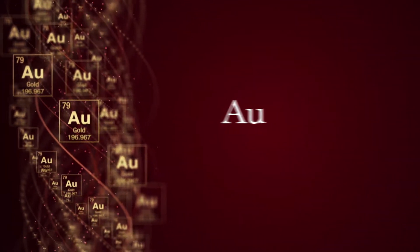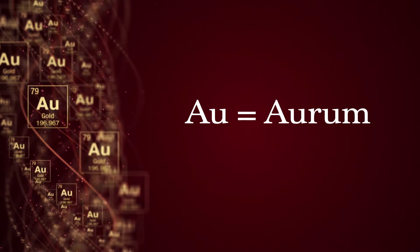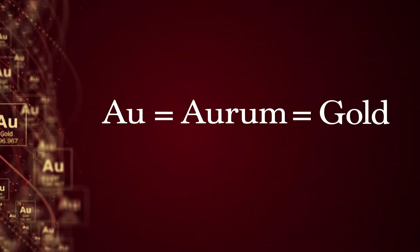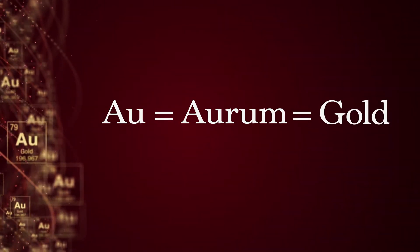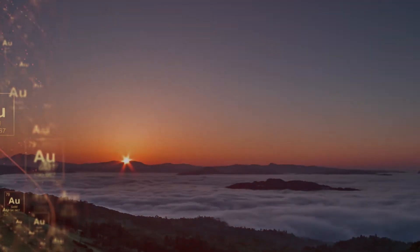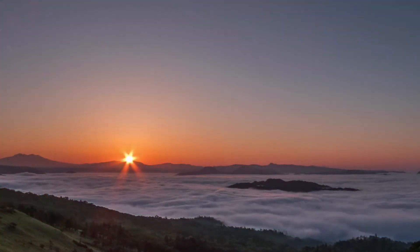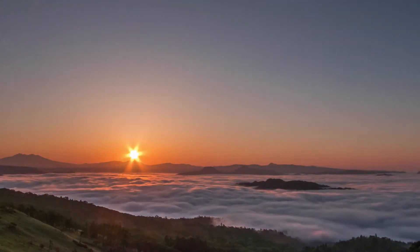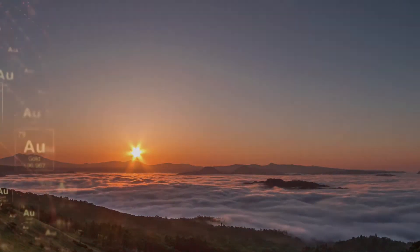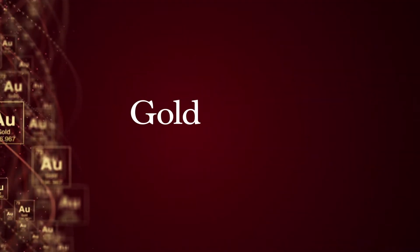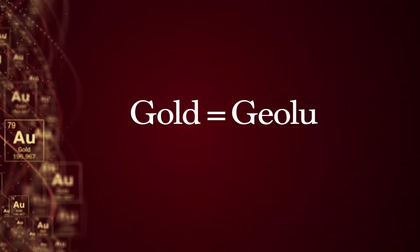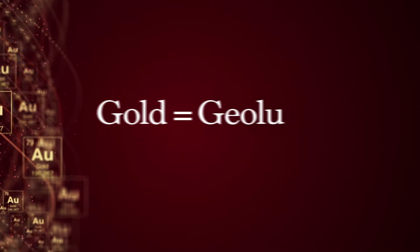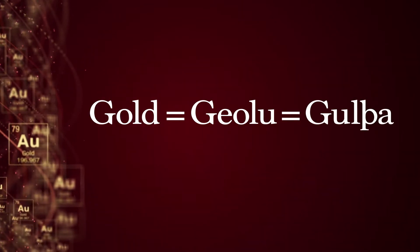Gold's chemical symbol, AU, is derived from the Latin word aurum, meaning gold. Some claim that the word aurum also means shining dawn due to its etymological ties to the word aurora, meaning dawn. The word gold comes from the Old English word for yellow, geolu, which was derived from the Germanic word gultha.